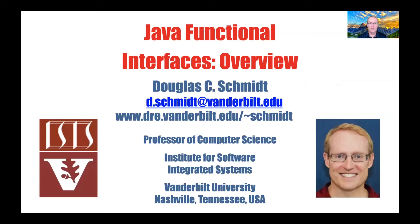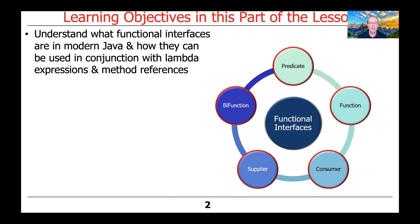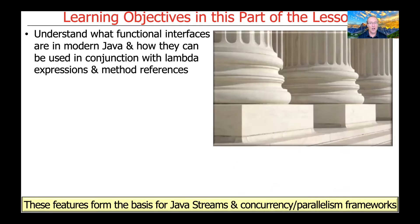Now that we've given an overview of Java Lambda expressions and method references, it's time to turn our attention to Java functional interfaces. In this part of the lesson, we'll explain what functional interfaces are and describe how they can be used in conjunction with Java Lambda expressions and method references. All these features form the basis for other parts of functional Java, including Java streams, as well as its concurrency and parallelism frameworks, such as Java parallel streams and Java completable futures.